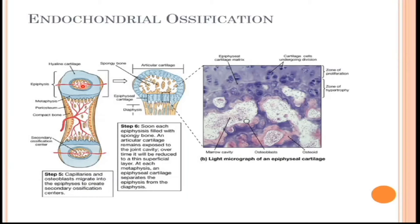Mesenchymal cells differentiate into chondroblasts, which start producing osteoids. The osteoids are deposited around the secondary ossification center, which enlarges over time as more and more bone material is produced. Finally, the edges become compacted by excessive deposition of bone material, while the internal part remains porous.